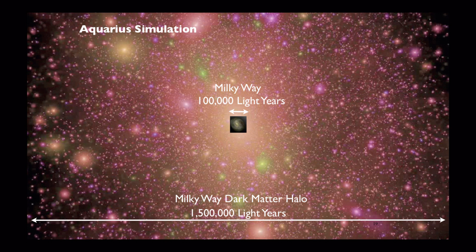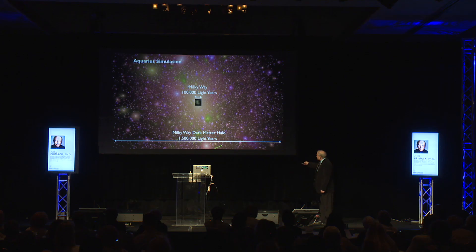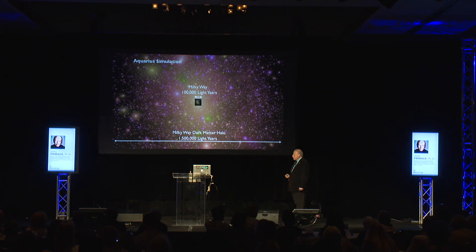How big is a galaxy compared to these gigantic computer-simulated dark matter halos? Our galaxy is about 100,000 light years across — the visible part — and the dark matter halo is more than ten times bigger.